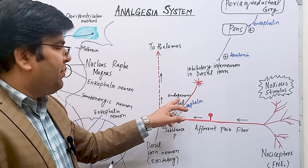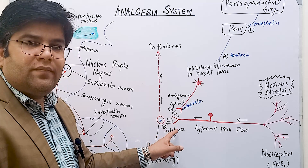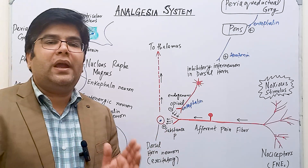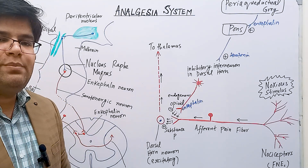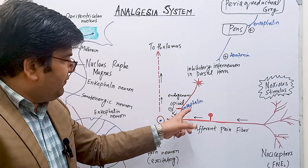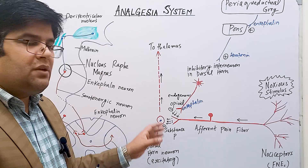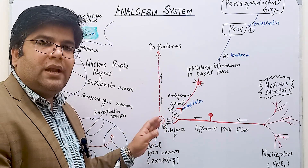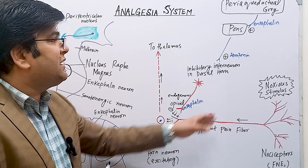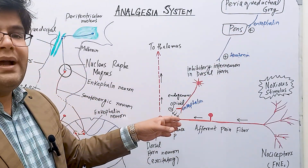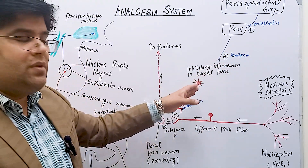The inhibitory interneuron in the dorsal gray horn releases enkephalin, which is an endogenous opiate substance. This has an inhibitory effect — shown by the negative sign — on the presynaptic endings of the pain nerve fiber, which is the type A-delta and type C nerve fiber. The release of pain transmitters like substance P and glutamate will therefore be suppressed. With no release of substance P, signals to the thalamus are suppressed — the excitatory interneurons are inhibited and second-order neurons cannot transmit pain signals to the thalamus. In this way, pain signals at the spinal cord entry level are suppressed by the centrifugal signals of the analgesia system.